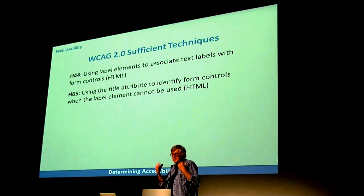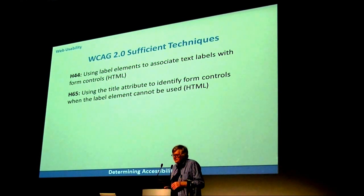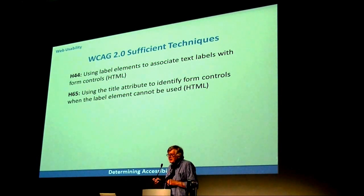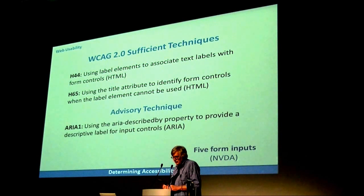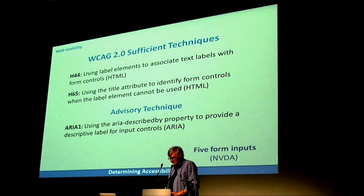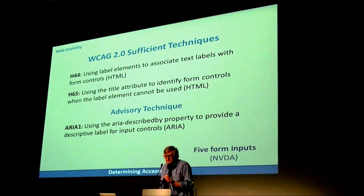First, a quick reminder of the WCAG success criteria techniques that benchmark form accessibility. We have two sufficient techniques: the first is labeling forms using the label 'for' attribute with a matching input ID attribute; the second is using the title attribute when you can't use a label. We also have one advisory technique — a WAI-ARIA technique — where 'aria-describedby' is used to identify a form input. I'm now going to fire up the screen reader.